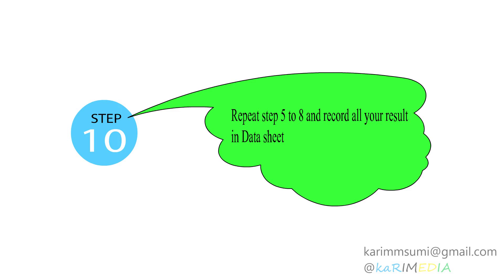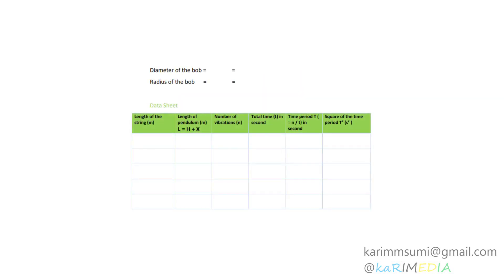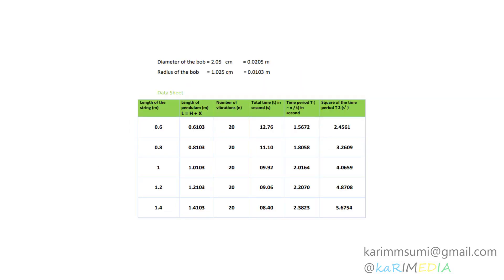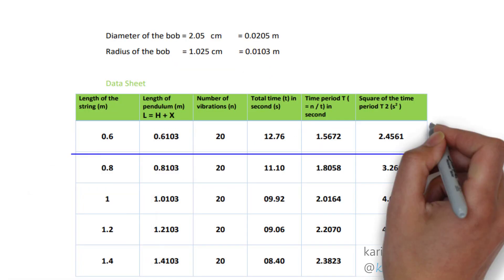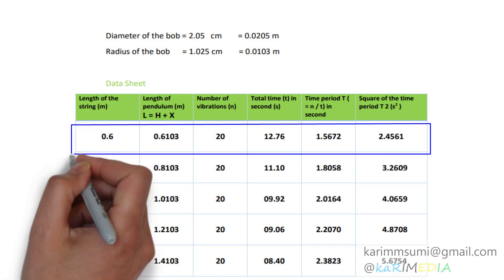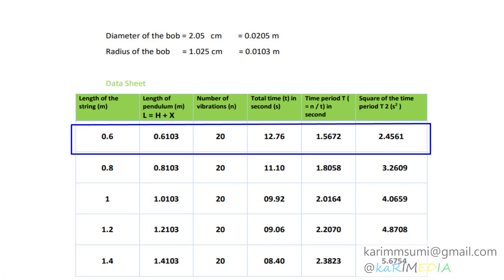Step 10: The data obtained from each experiment are recorded in the datasheet as shown. Then, taking data from experiment 1, when the string length of the pendulum was 60 cm, these are used to plot the graph.